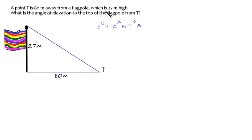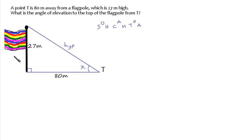Here's another question. We've got a point T which is 80 metres away from a flagpole, and the flagpole is 27 metres high. We're asked to find the angle of elevation to the top of the flagpole from point T — that's the angle between the horizontal and the line from T to the top of the flagpole — and we'll label that angle X. The flagpole and the ground form a right angle. The hypotenuse is the line from T to the top; the height of the flagpole is the opposite; and the ground is the adjacent. We know the opposite and the adjacent, which are connected by the tan ratio, so we'll use the tangent ratio.